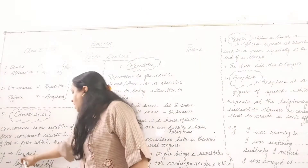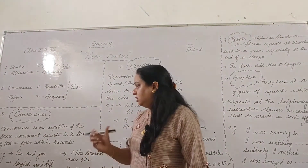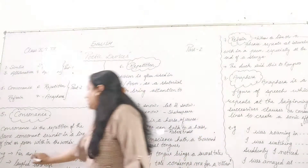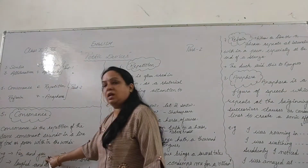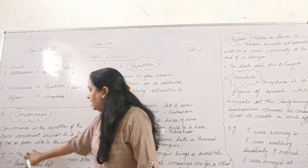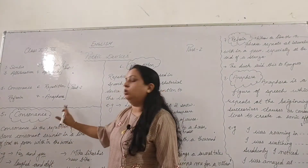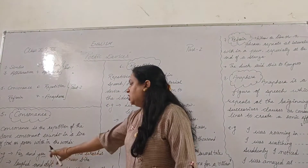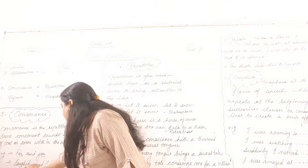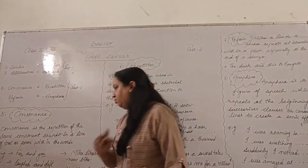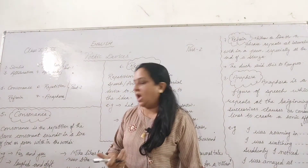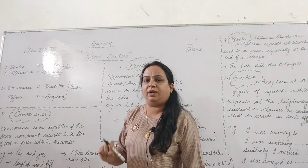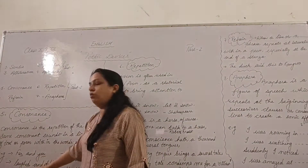For example, take 'far' and 'jar' — the consonant sound 'R' is being repeated in both words. That is consonance. The second example is 'laughed' and 'dapped' — the 'D' sound is being repeated here. Note that in 'laughed,' the GH gives the sound of F, not D, but D is the consonant being repeated in both words. So that is consonance.